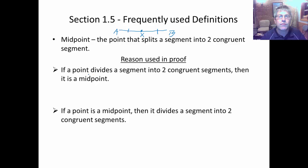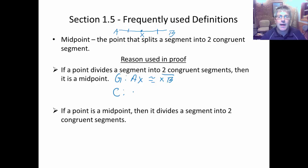As a reason in proof: if a point divides a segment into two congruent segments, then it's a midpoint. In this case, we must be given two congruent segments — so we'd need to be given that AX is congruent to XB. Then our conclusion would be that X is a midpoint.